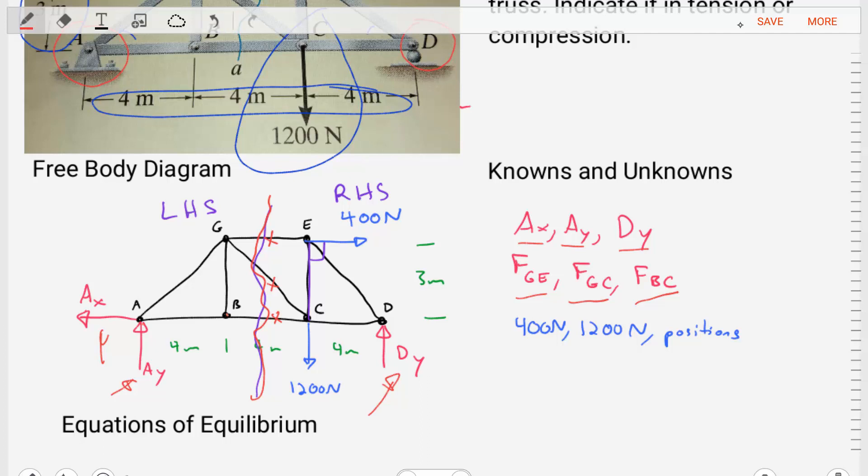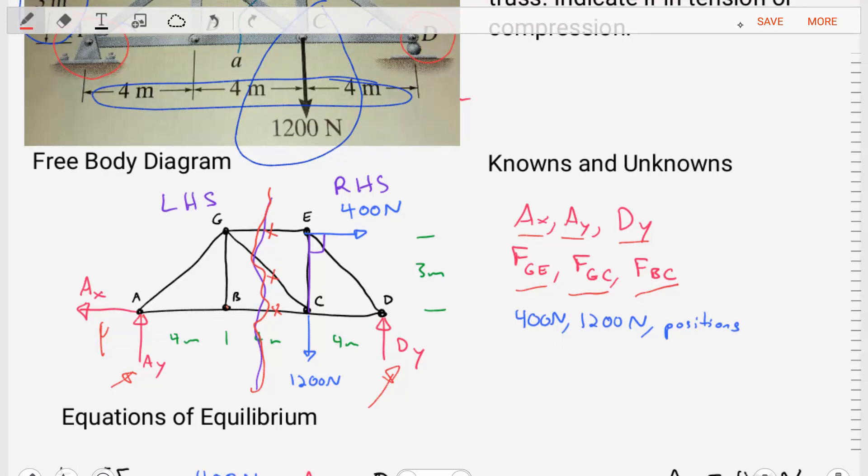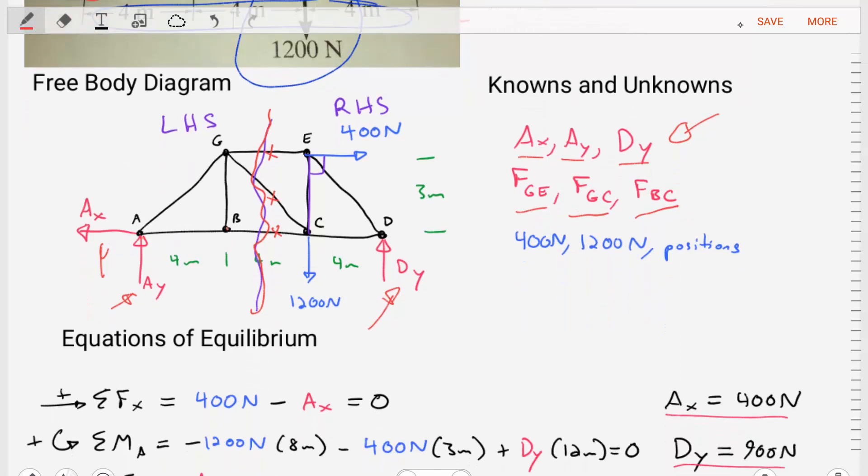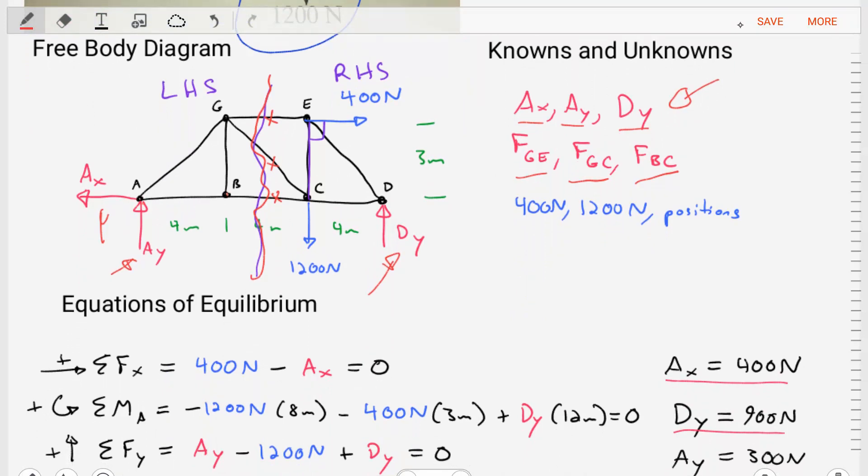And that's going to be useful for later. Now, before we section the body and take either the left-hand side or the right-hand side, it's important for us to find the value of AX, AY, and DY, to find these support reactions. So let's go ahead and take the full free body diagram and create equations of equilibrium for this full free body diagram.